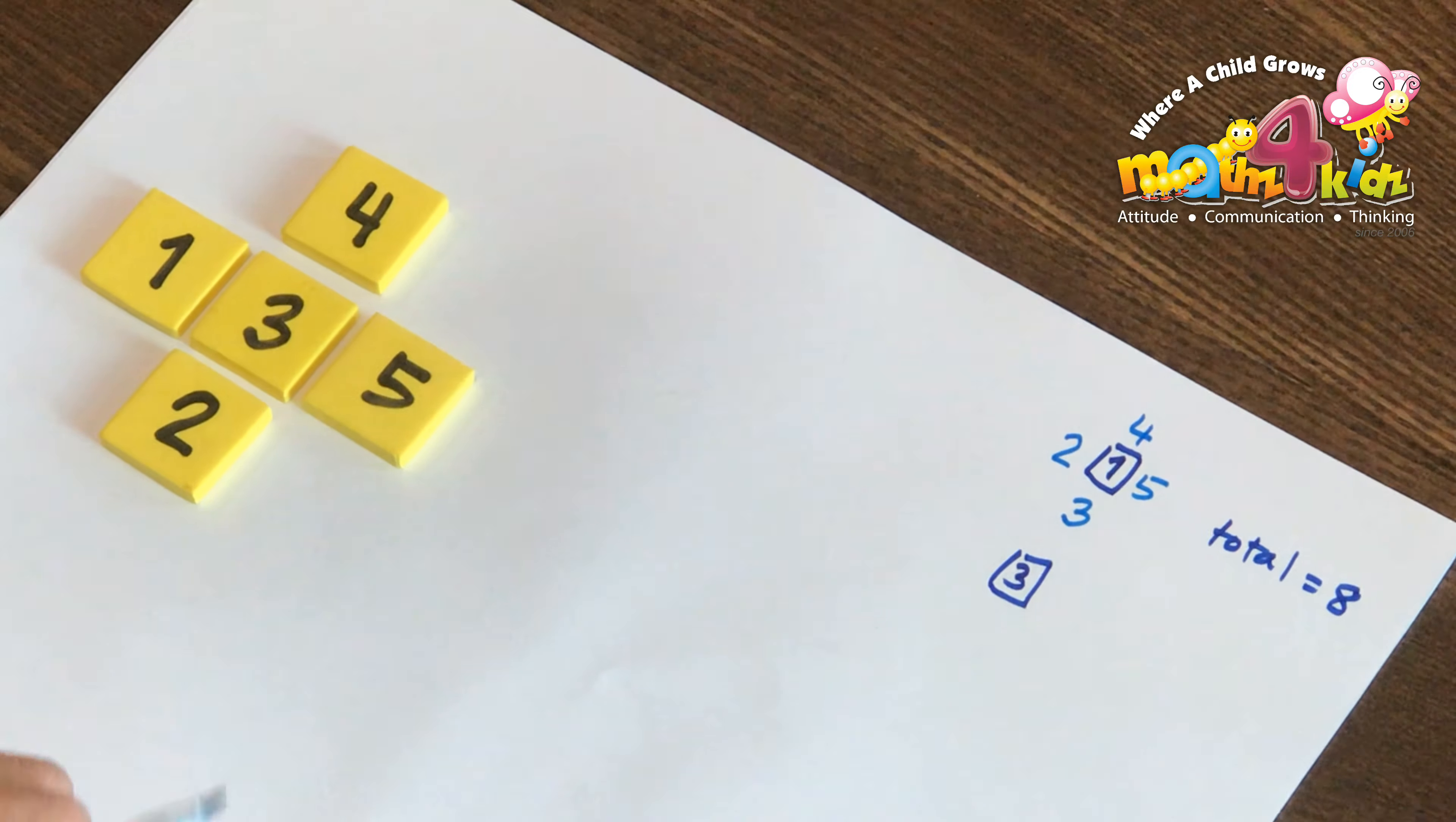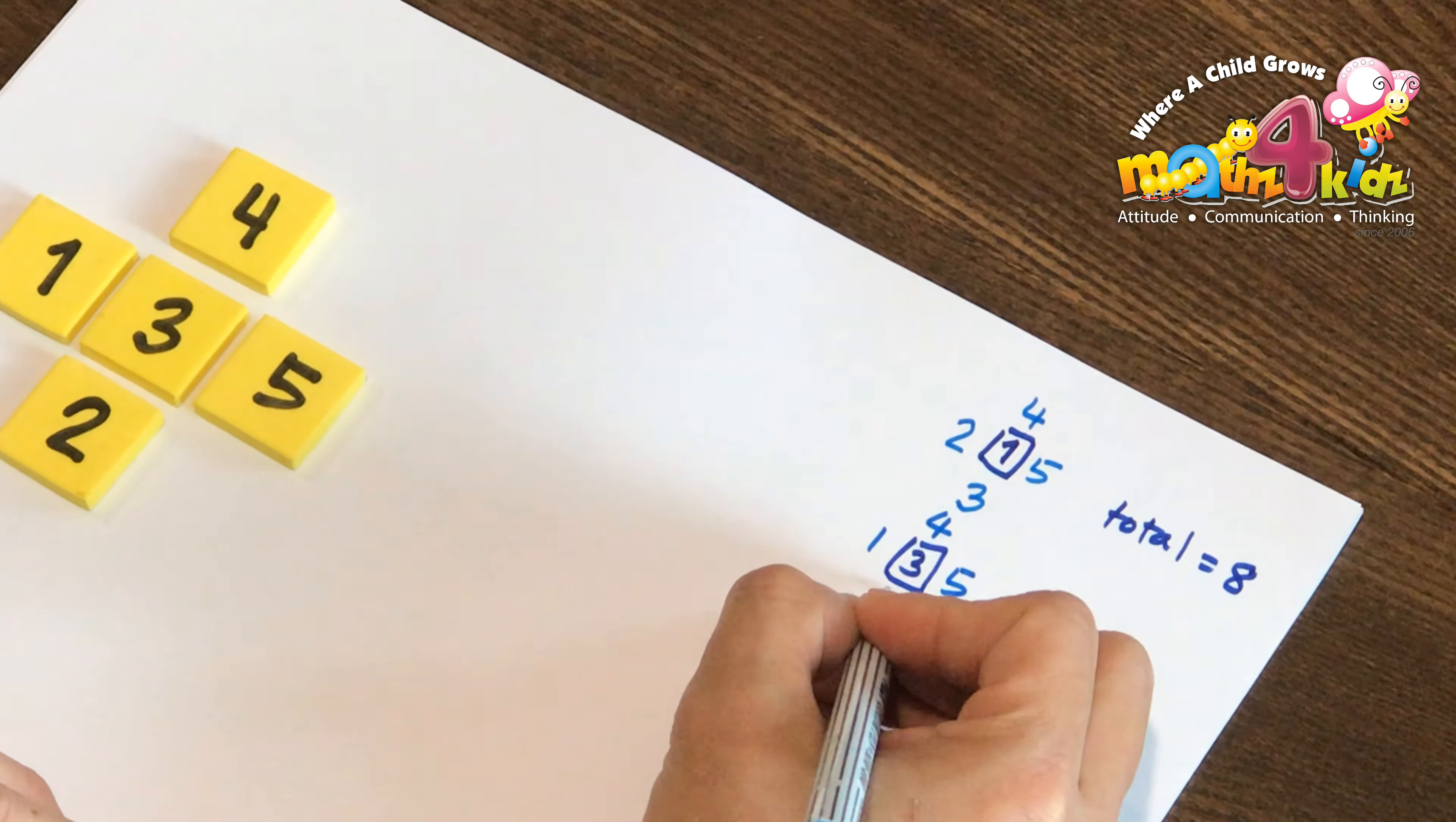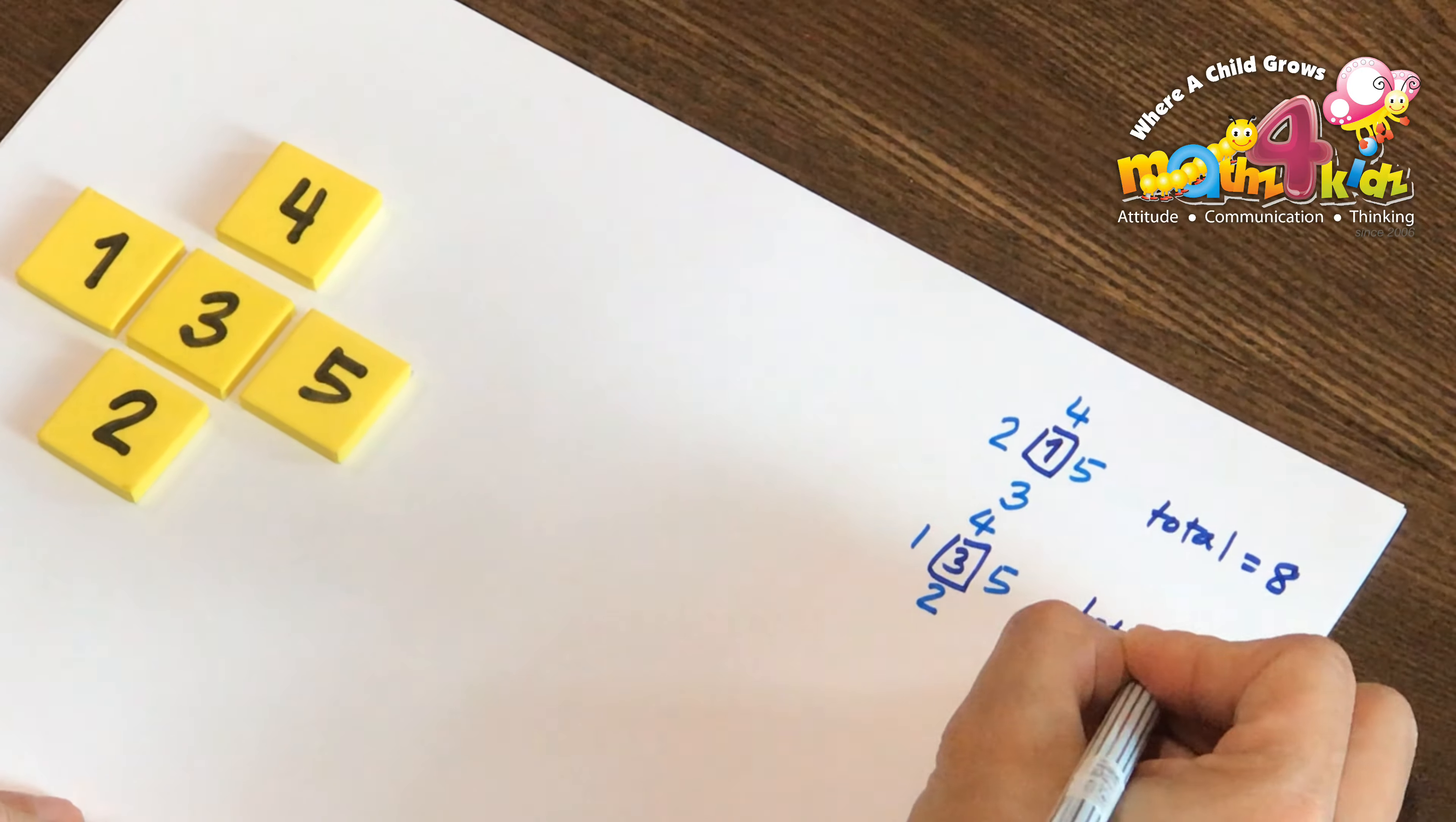And other numbers around it. 1 and 5 horizontally, 4 and 2 vertically, giving us a total of 9.